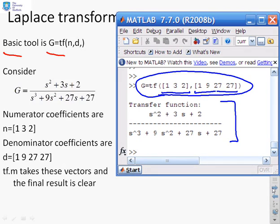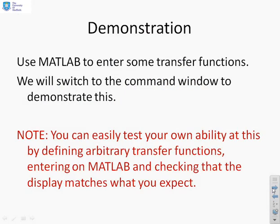So you've got the key syntax here, you use tf, that says define a transfer function, and MATLAB is expecting first a vector of coefficients of the numerator, a comma, and then a vector of coefficients of the denominator. Now we're going to demonstrate this using MATLAB to make it clear. The best way to test that you've got this is to write down some arbitrary transfer functions on a piece of paper, try entering them on MATLAB and checking that what MATLAB displays is what you expect.